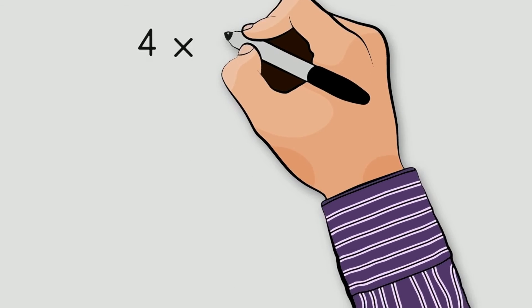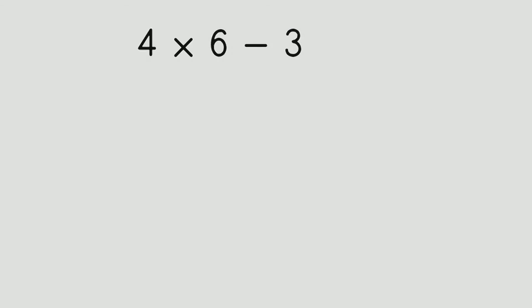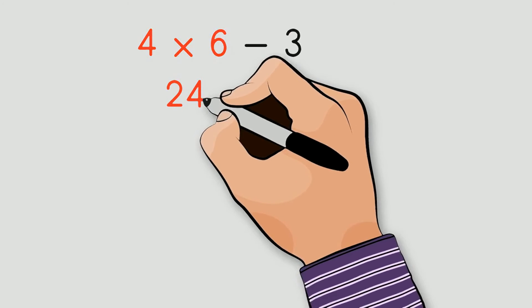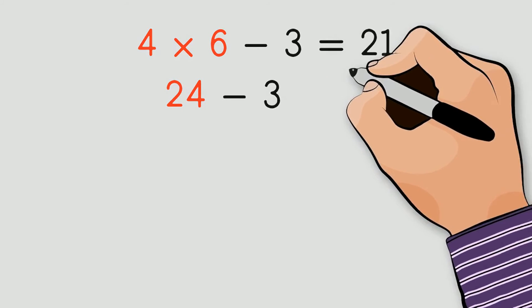Suppose we have the following expression. 4 times 6 minus 3. How do we solve this problem? Remember, you multiply before you add or subtract. Therefore, we start by multiplying 4 times 6, and then subtracting 3, giving us 21 as a result.